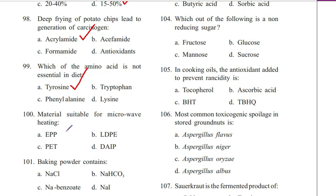This is today's last question. Question number 100. Material suitable for microwave heating: EPP, LDPE, PET, or DAIP. Answer is C. PET — Polyethylene Terephthalate. If you like this channel, please share and subscribe. Don't forget to click the bell button.